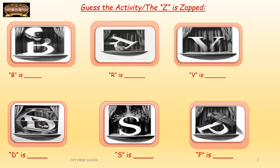I can give you the example of the first one so that it becomes easy for you to guess the others. The first one is B, and if you see, there is a dog trying to bite it and it has been bitten. The upper part of the B is bitten, so you can call it 'B is bitten.' You can try and guess the rest of the letters — what has been done to them. I will give you some time to guess.